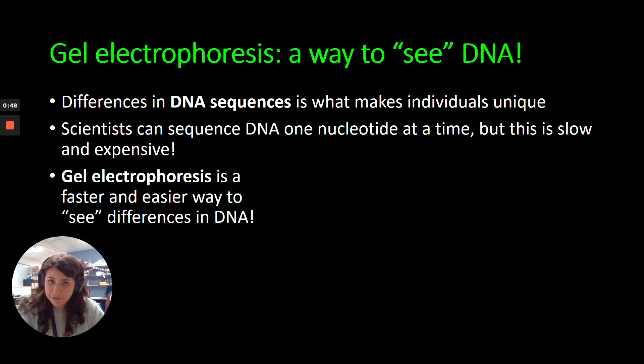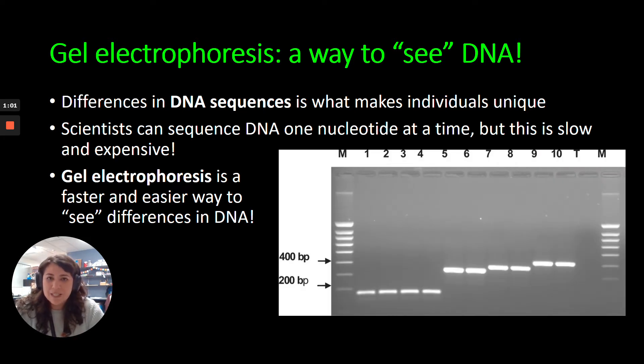But there's something called gel electrophoresis, which is sort of a faster and easier way for us to see differences in DNA. So we're not actually going to sequence the entire DNA when we do gel electrophoresis. Instead, we'll get a picture that looks something like this. So what I want you to pay attention to in this picture are the white lines, which we call bands. And I hope what you can recognize is that some of them are bigger and some of them are smaller. And that's what we're looking for here in gel electrophoresis. We're essentially trying to see the difference in the size of these DNA bands, and that lets us see differences in DNA.